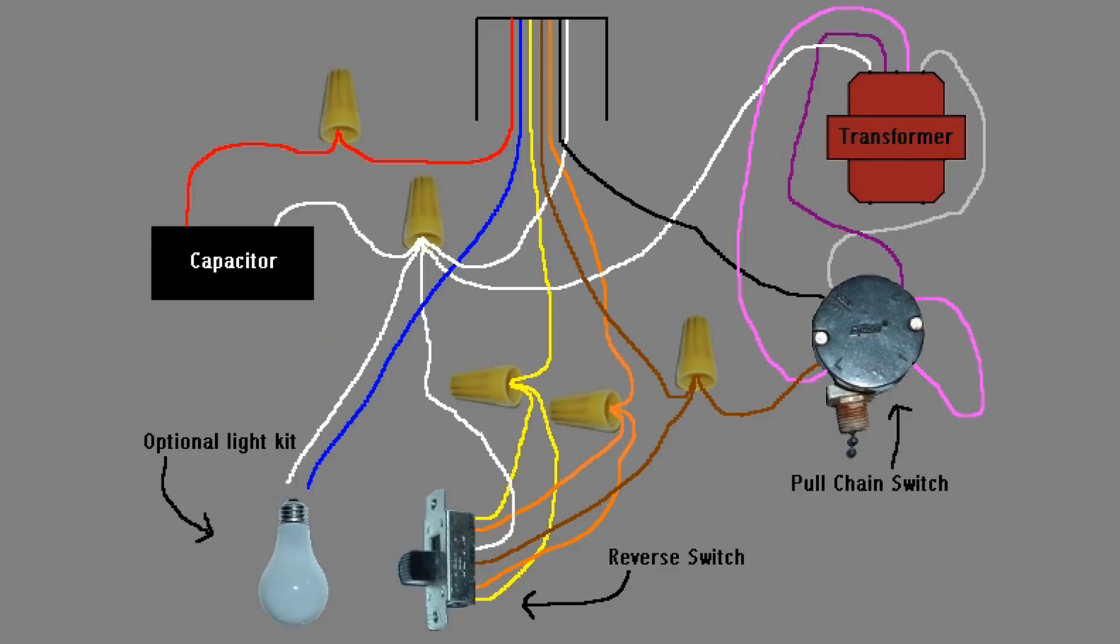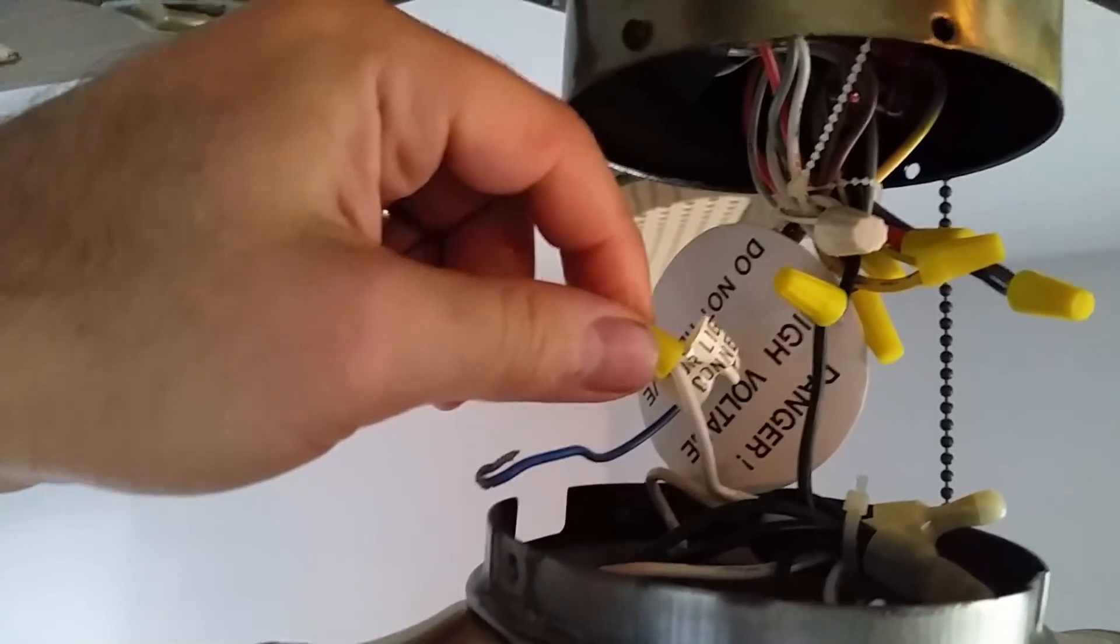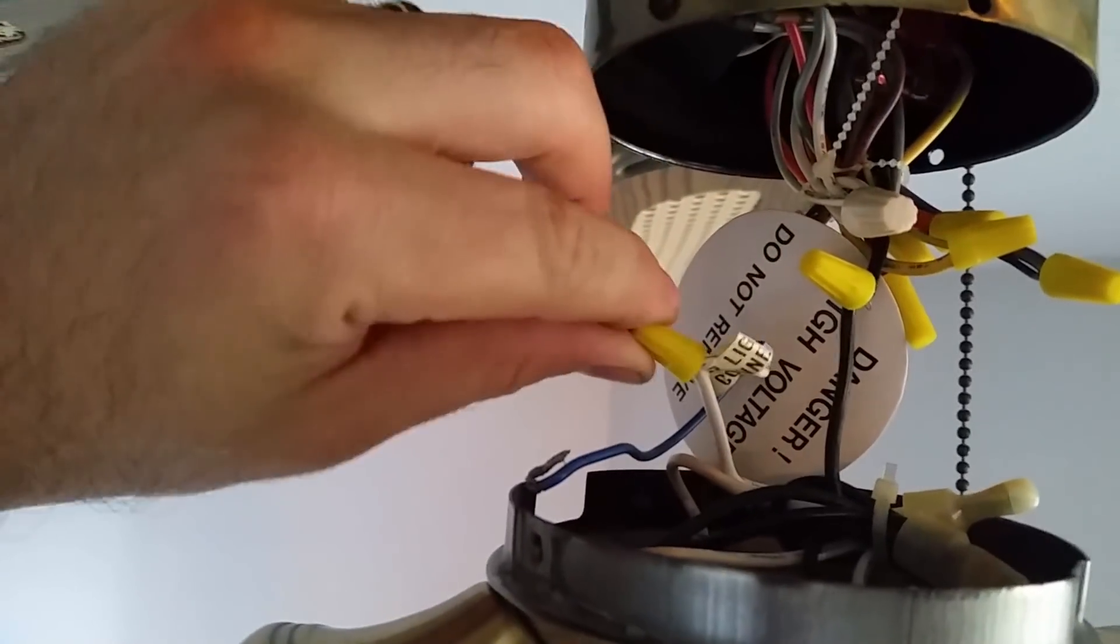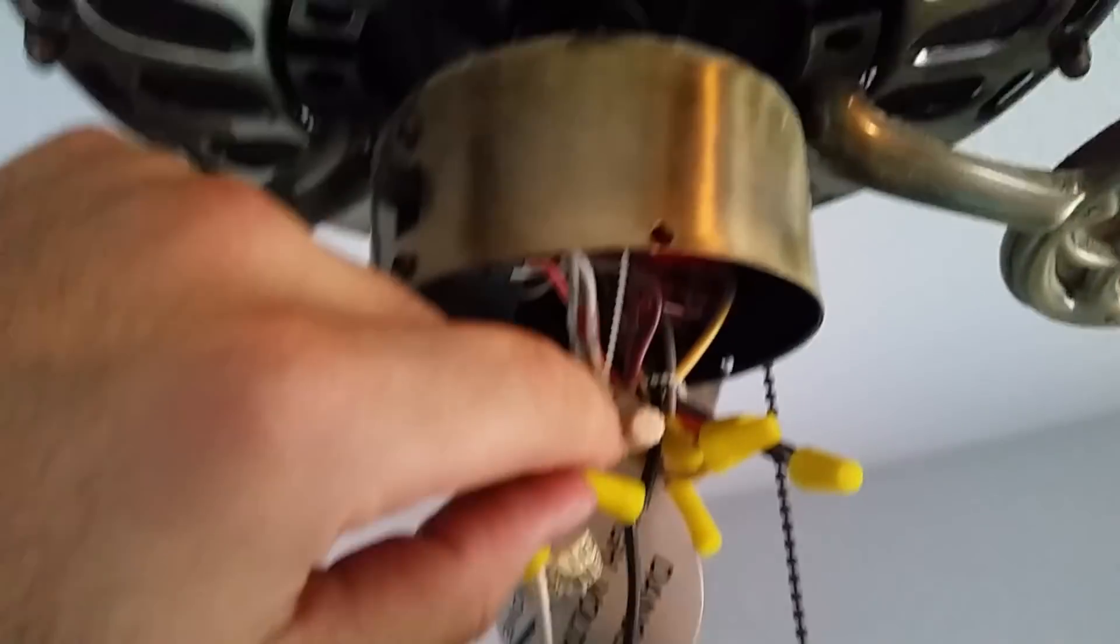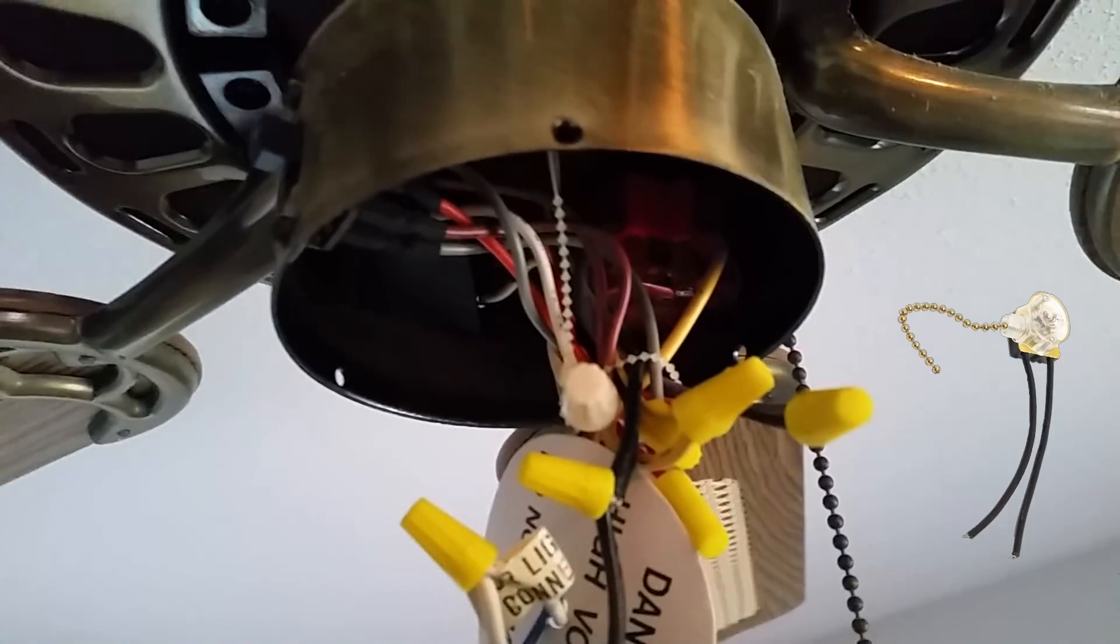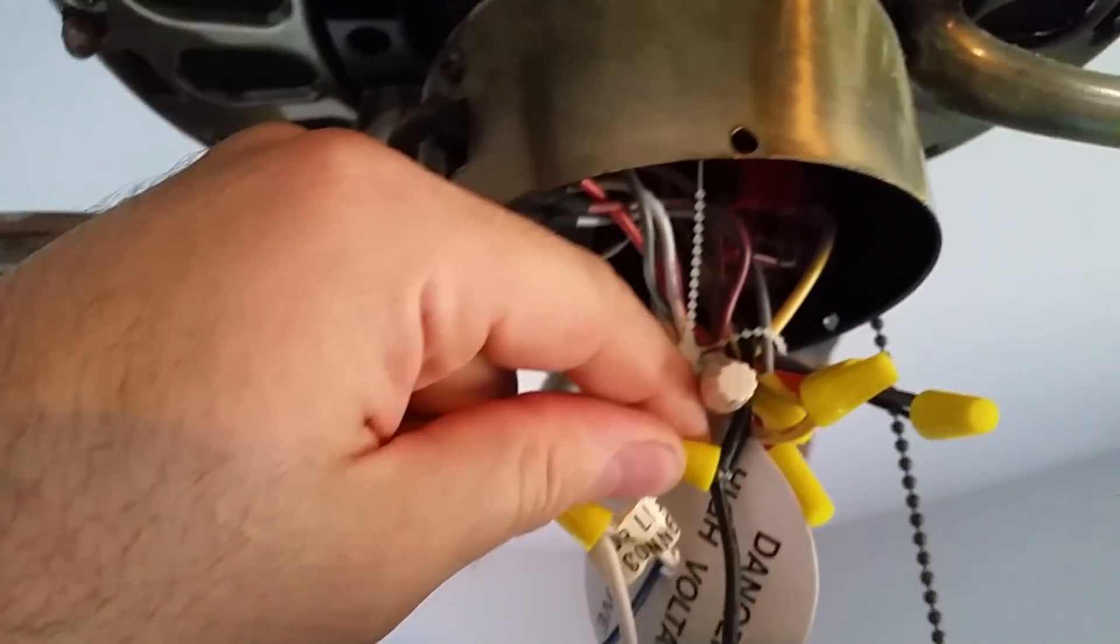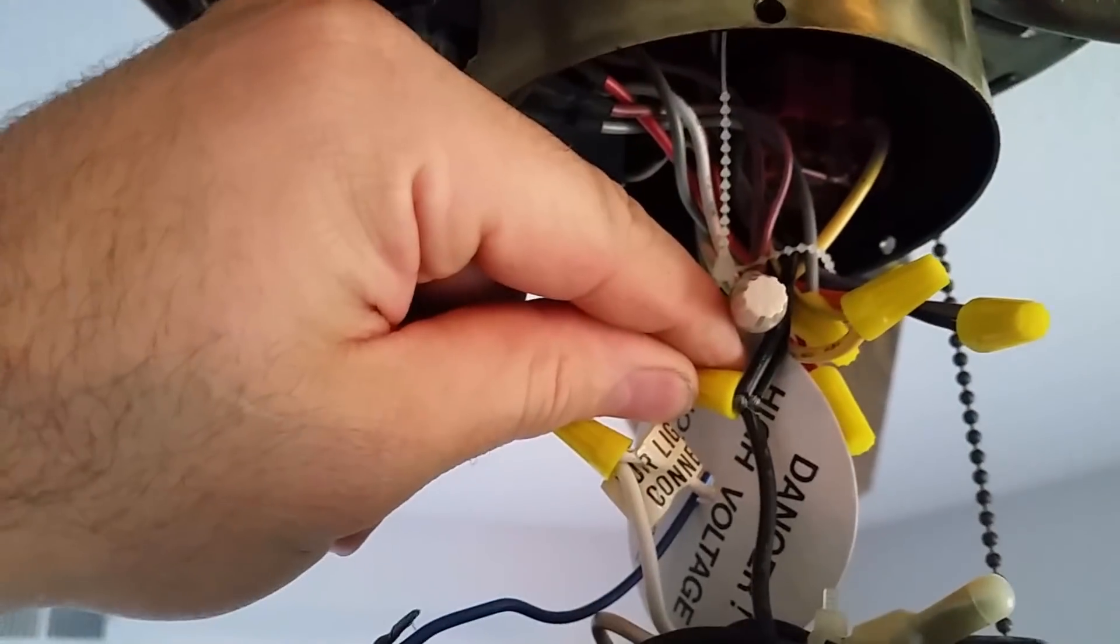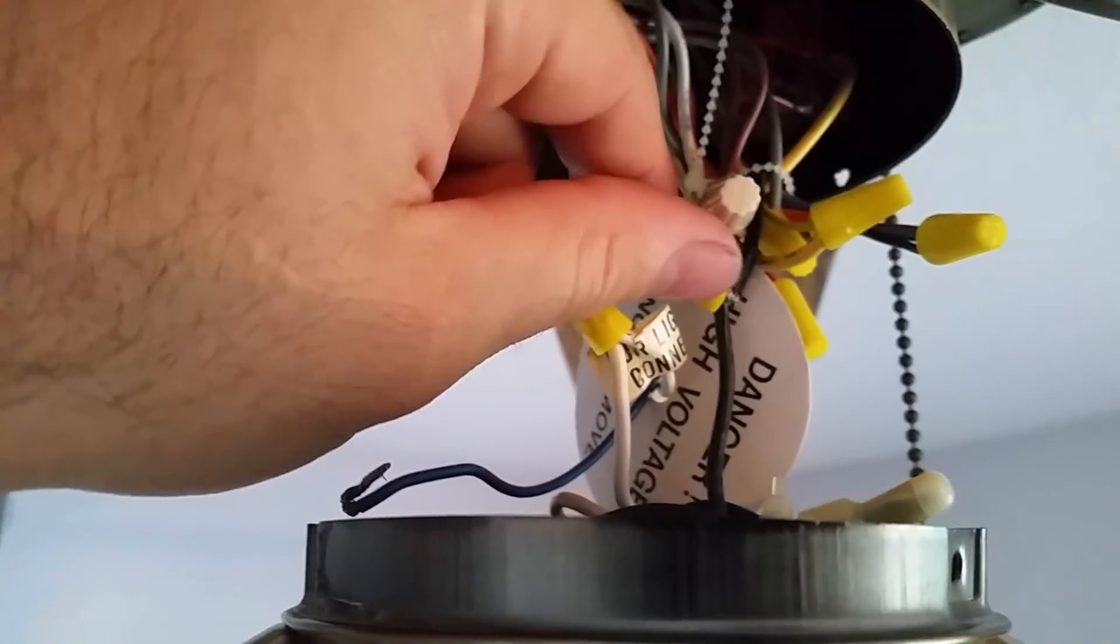What you can do is bypass that. Take your white wires, which is your neutral, and connect that to your light. Then come up to your fan switch where you have full 110-115 volts, take your black wire from the fan switch, and splice into that so you have your neutral leg and your hot leg.